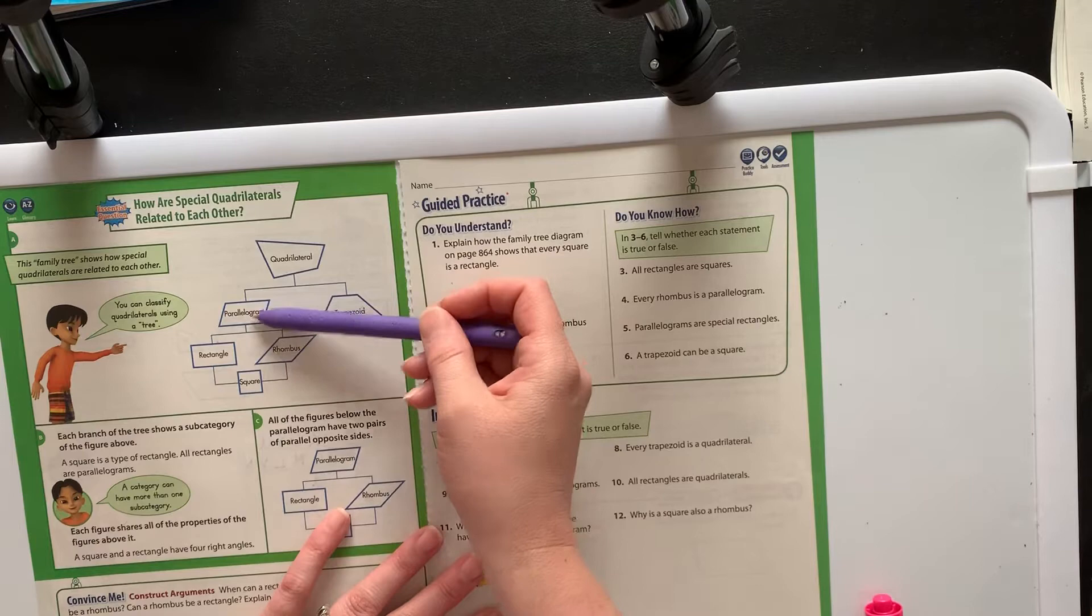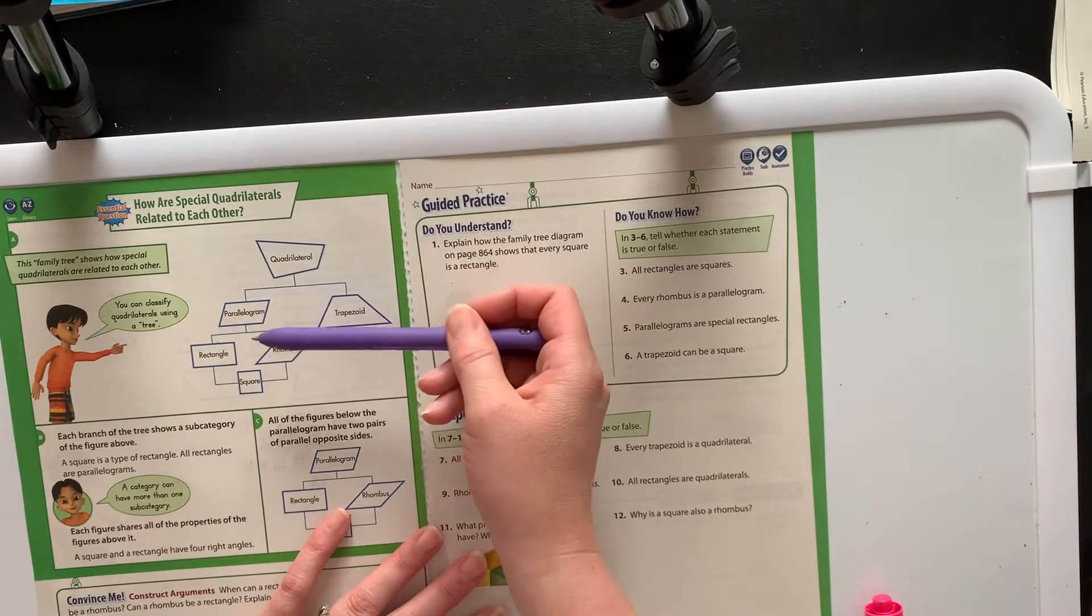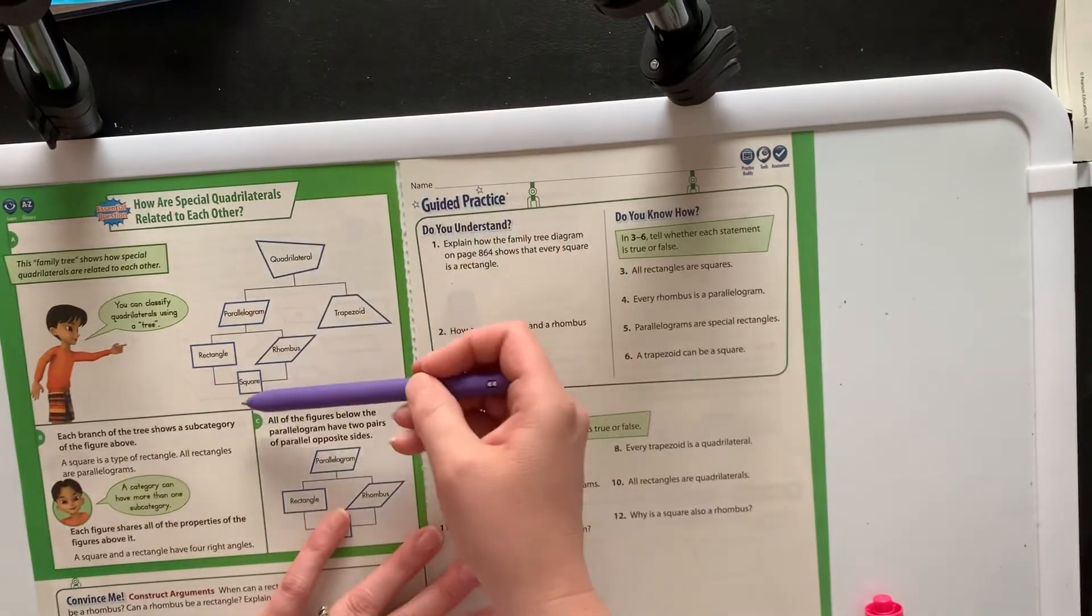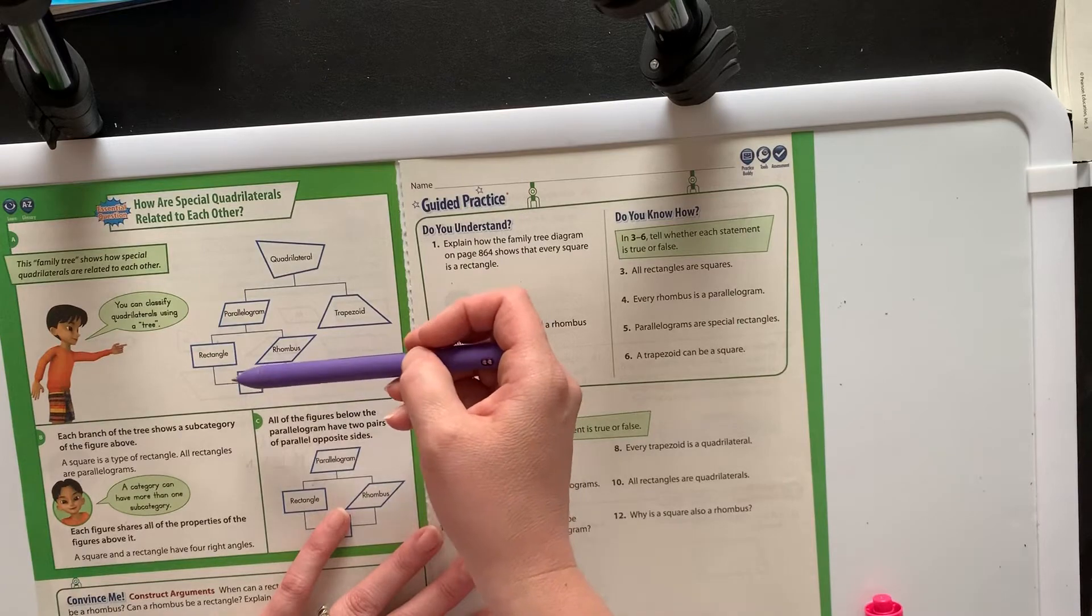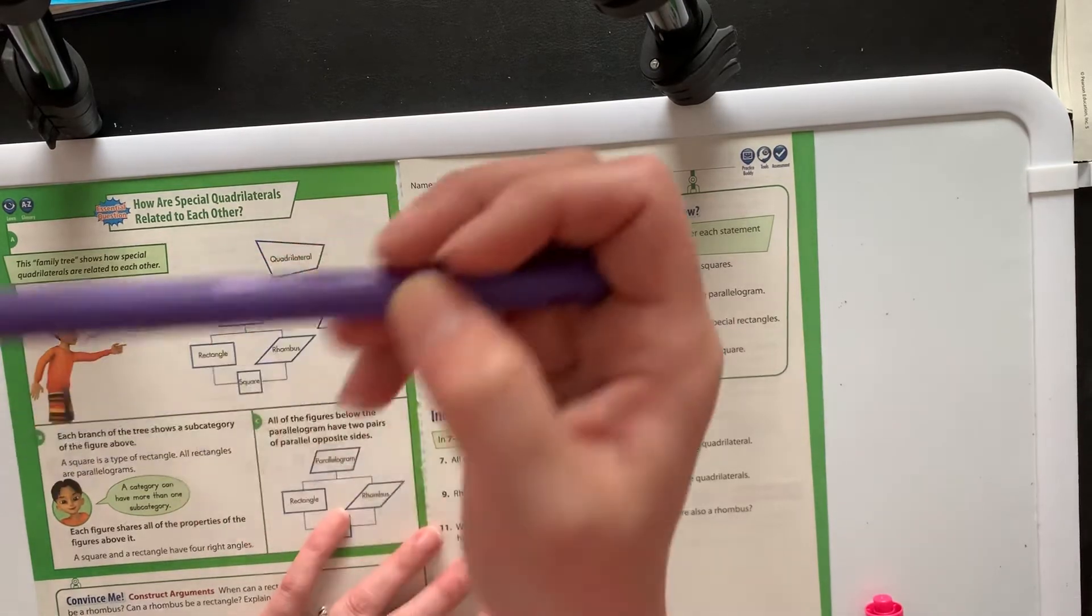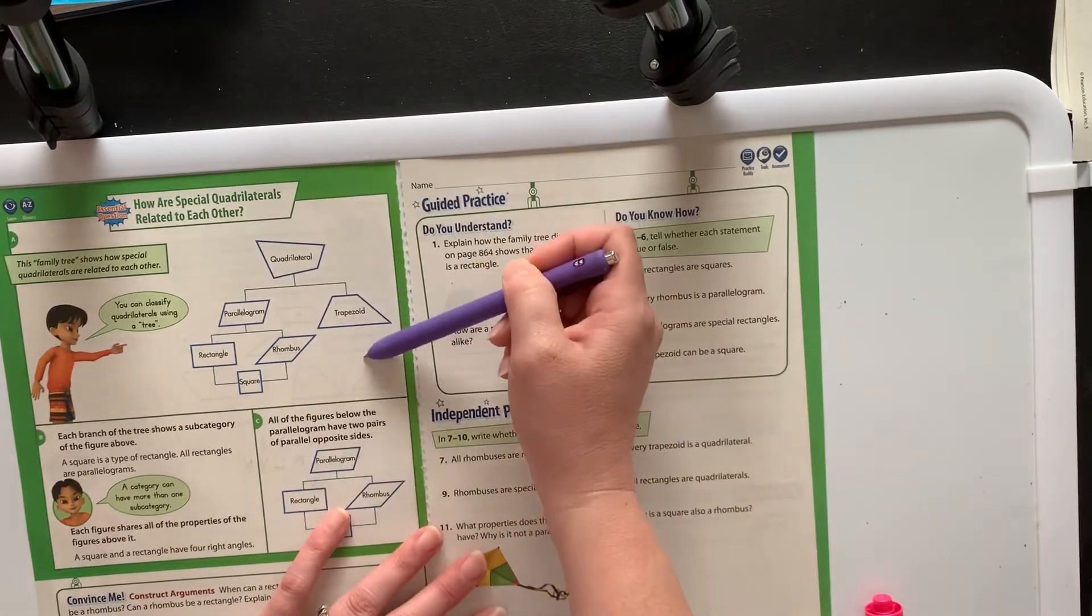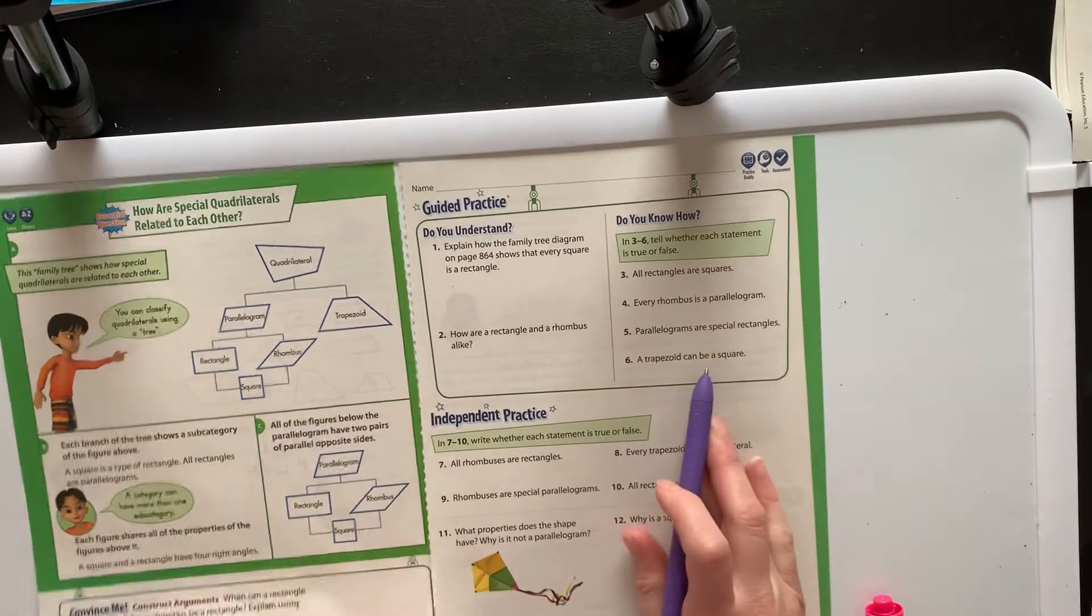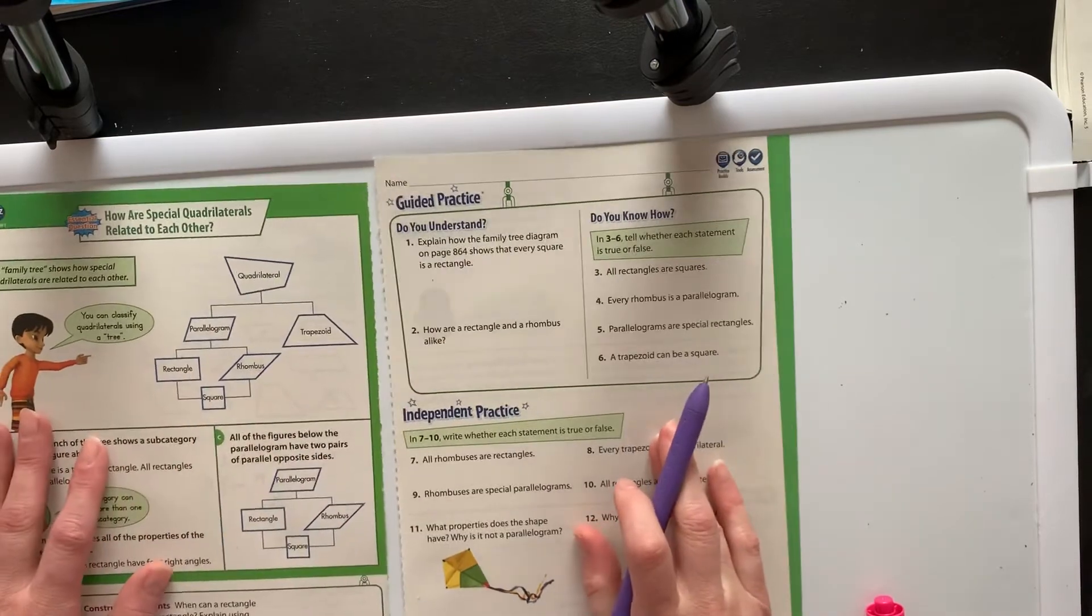But under the parallelograms, all rectangles are parallelograms, all rhombuses are parallelograms, and all squares are rectangles and rhombuses and parallelograms and quadrilaterals. And then the trapezoid is just over here by itself. Trapezoids probably love social distancing.